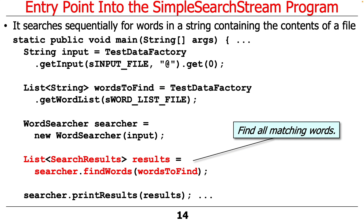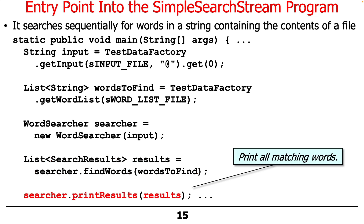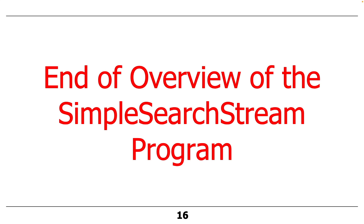The search results indicate where, if anywhere, a particular word appears multiple times in the input string. Then we print the results in various ways — printing everything, then slicing and dicing it with some other examples as well. That's the end of the overview of the SimpleSearchStream program.